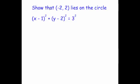The last question says: show that (-2, 2) lies on the circle with equation x minus 1 squared, plus y minus 2 squared, equals 3 squared. We just need to substitute this coordinate into the equation of the circle and show that it lies on it.